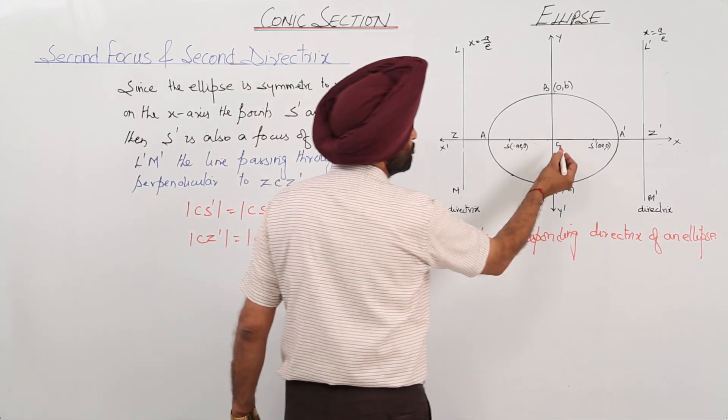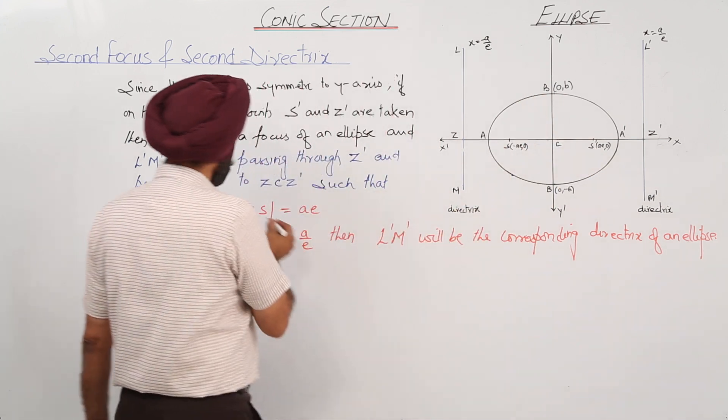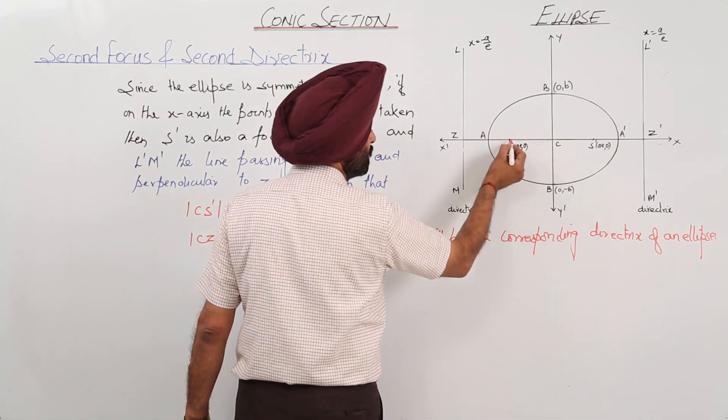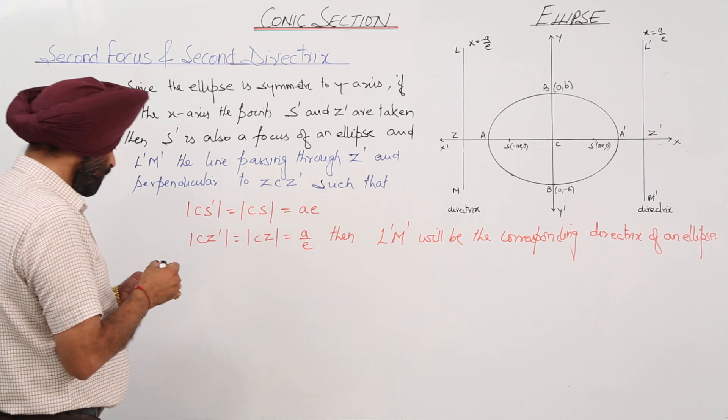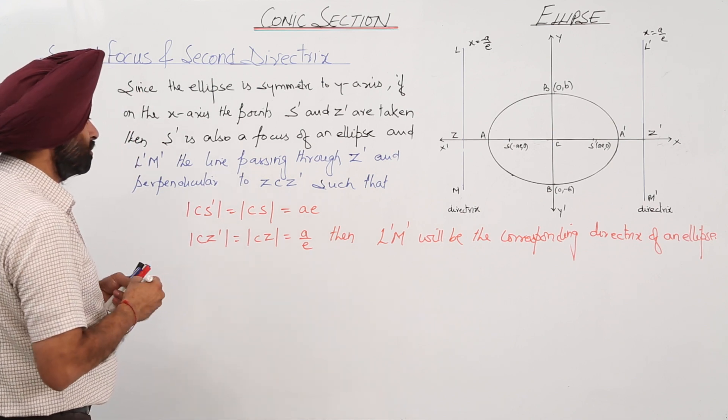So, CS dash and CS, from C to S. Now what this shows?